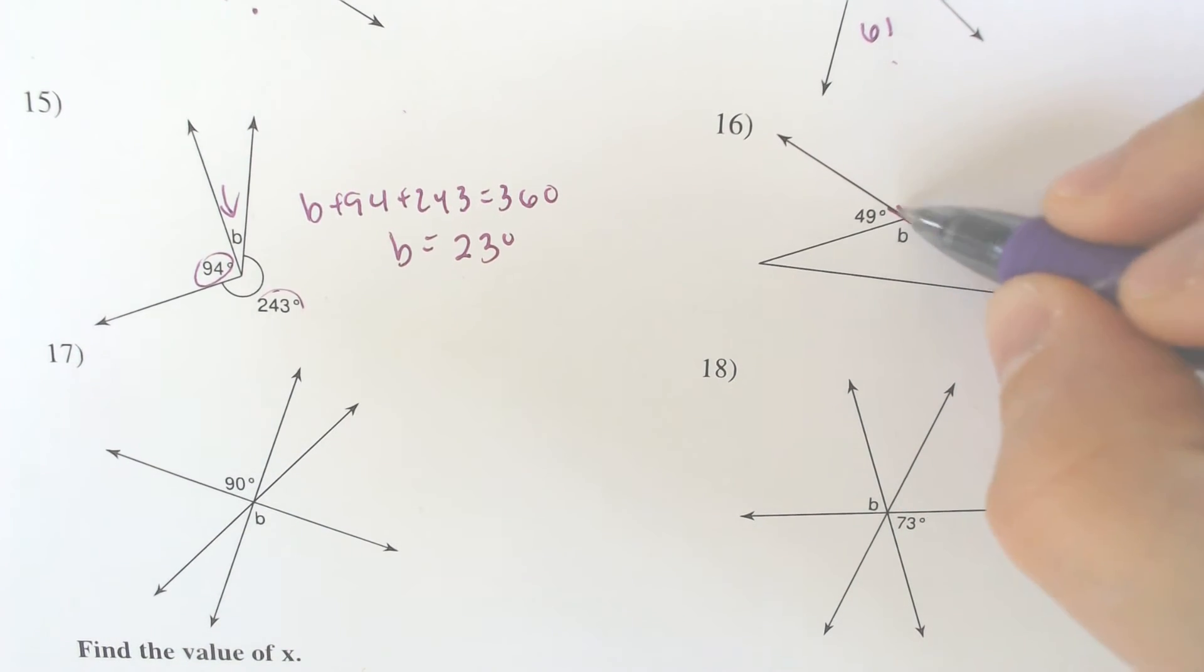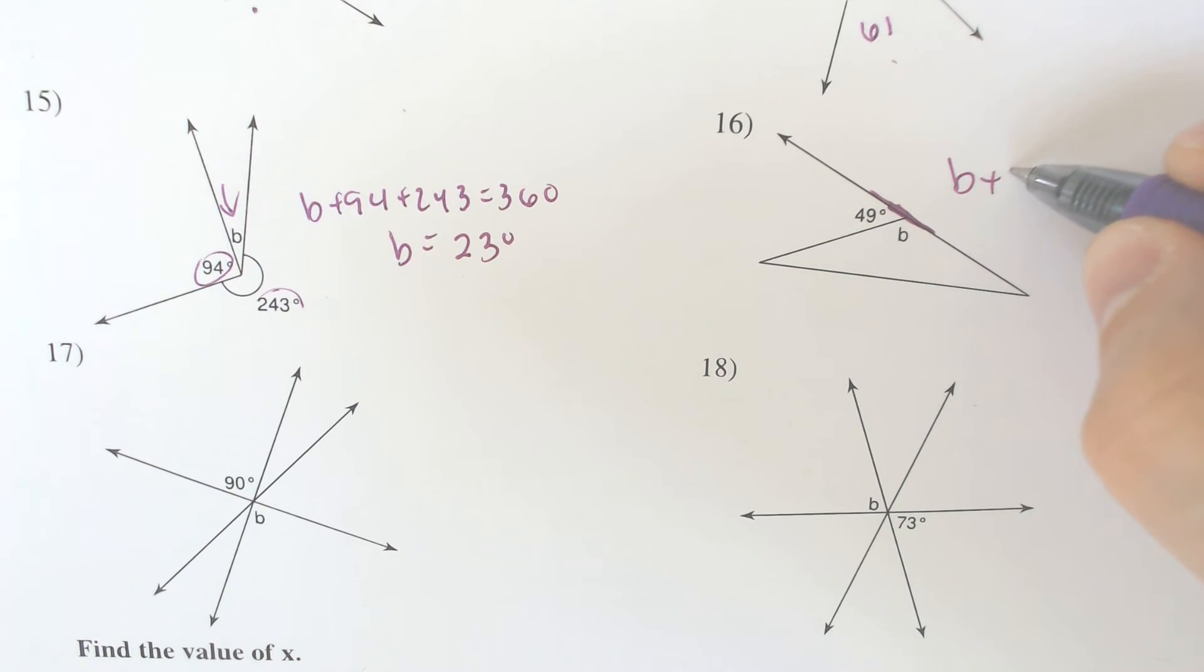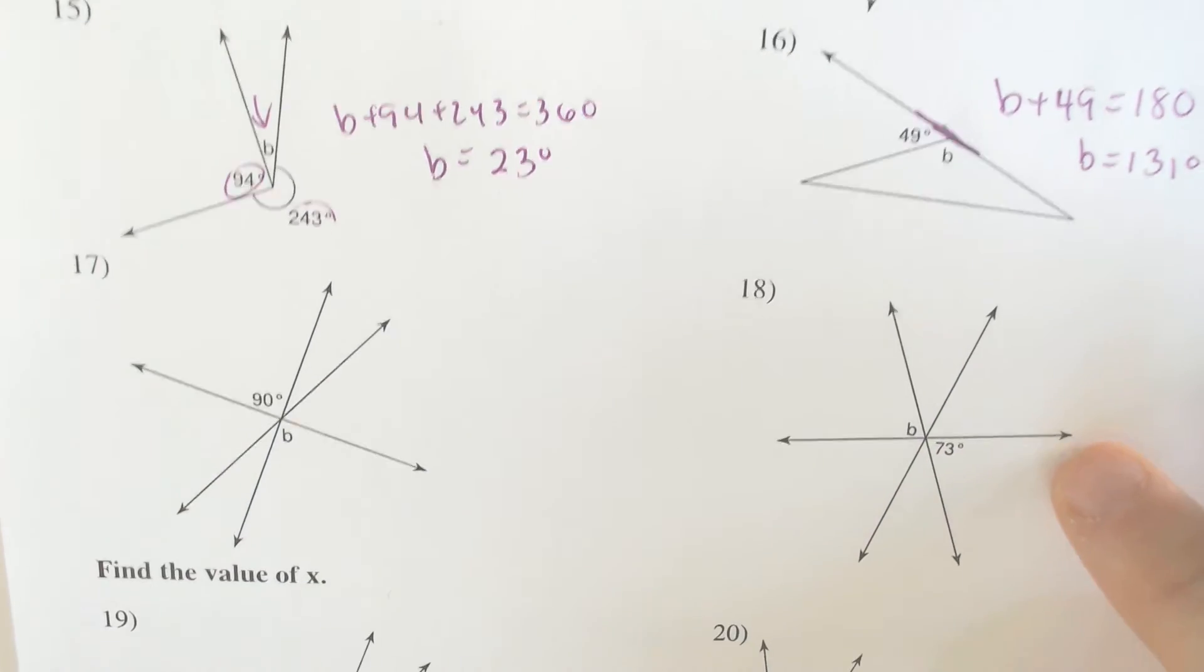Look at 16. What angles are these forming? They're forming a line. So that means that they have to add together to make 180. You can just take that singular number away from 180, the 49, and get B is equal to 131.